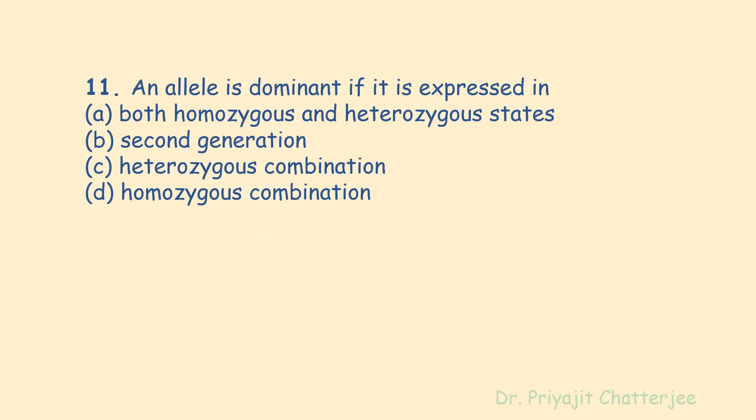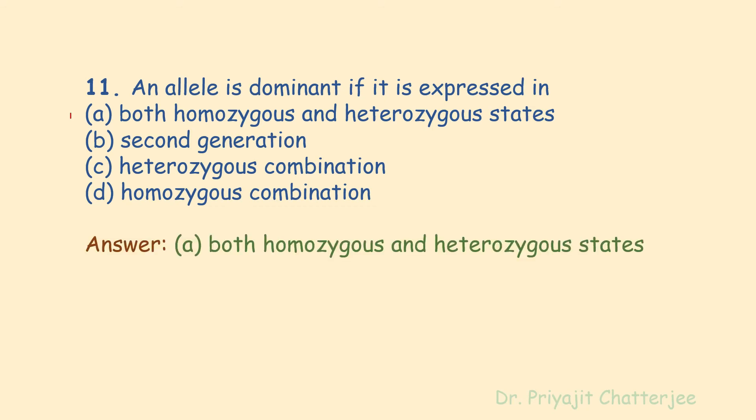The next question: an allele is dominant if it is expressed in — options are both homozygous and heterozygous states; second generation; heterozygous combination only; or homozygous combination only. The correct answer is both homozygous and heterozygous states. An allele is an alternative form of a character controlled by a single gene; it is dominant whether in a homozygous or heterozygous state.